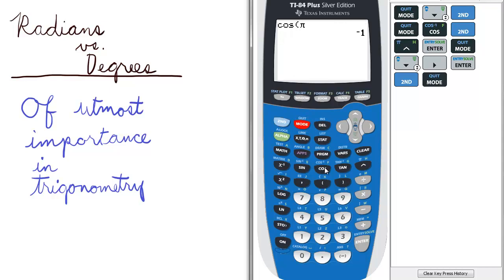So now if we find the cosine of pi, but in this case pi degrees, we get 0.998. Most likely the wrong answer.